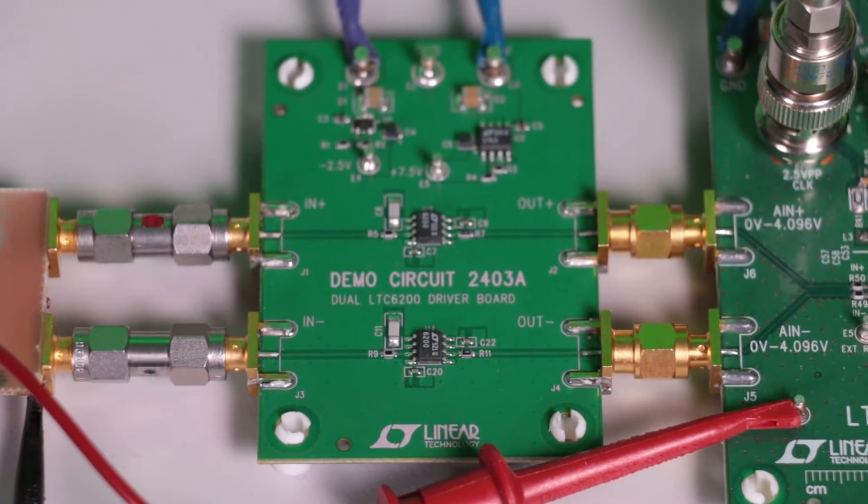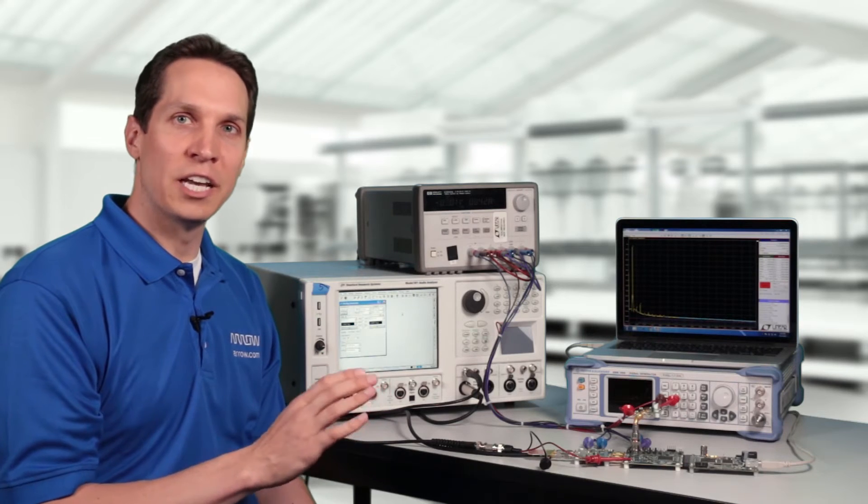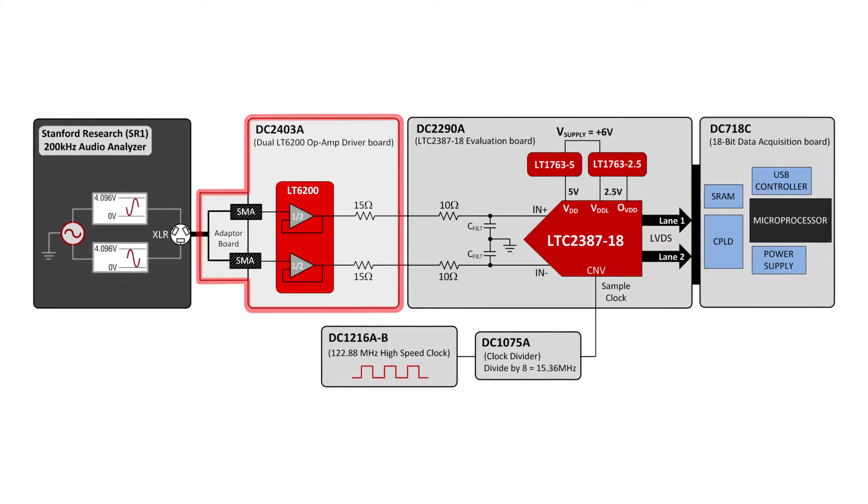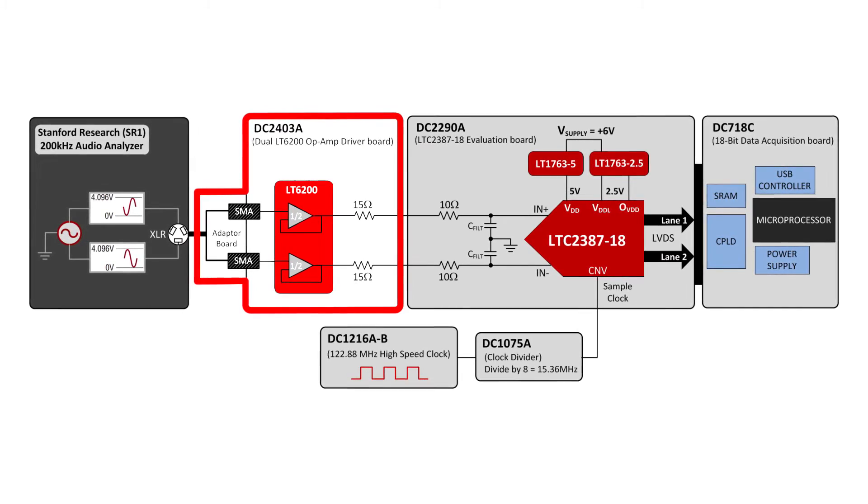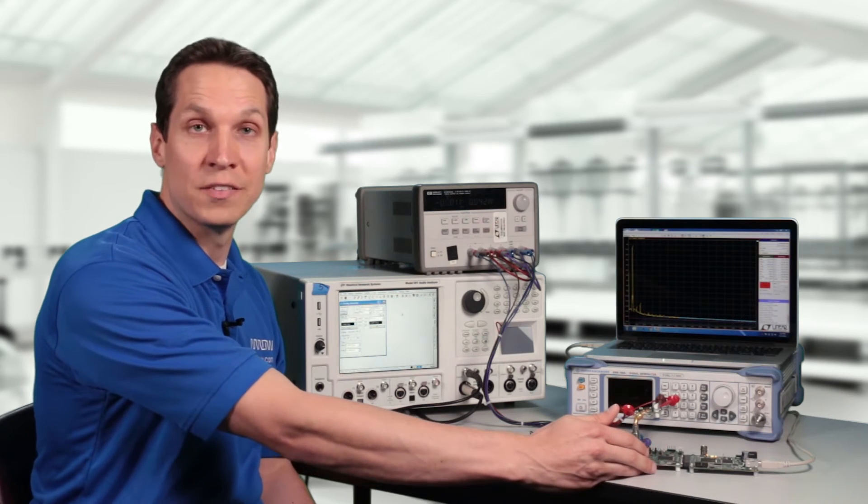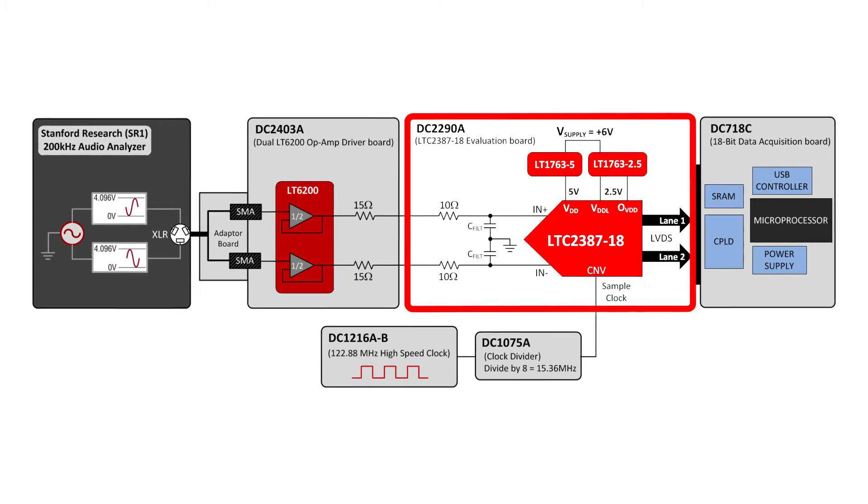We are going to use two LT-6200s, which are low-noise, high-linearity amplifiers to drive the differential inputs of the ADC. The development board that includes the two LT-6200s is the DC-2403A. The development board for the LTC-2387-18 is the DC-2290A, which includes a simple RC section preceding the ADC, shown in the block diagram.